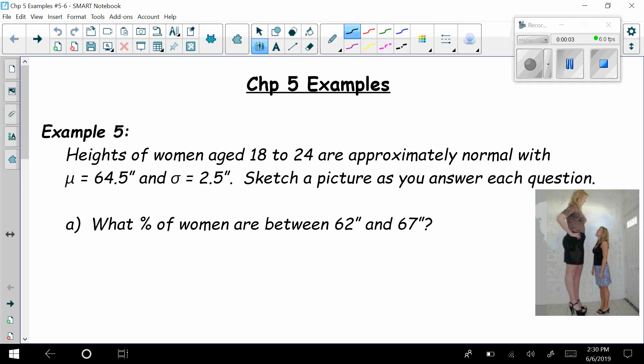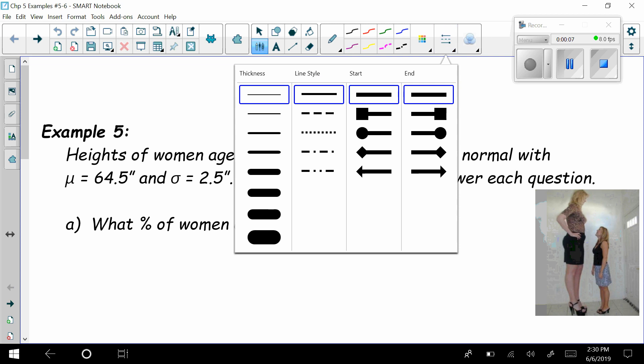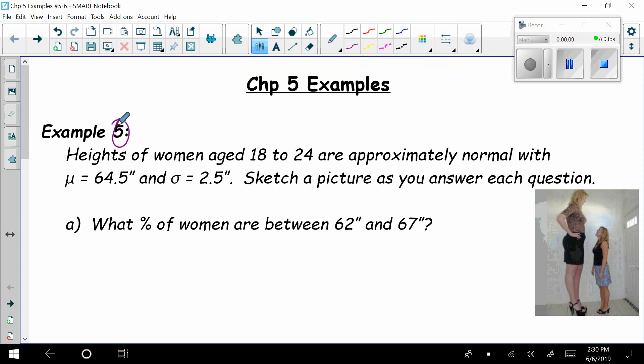Hello, statistics students, and welcome back. This is chapter 5 still, and we're on to example number 5. Here we're going to be talking about heights of women, and we're going to be using the empirical rule throughout to help us out here.